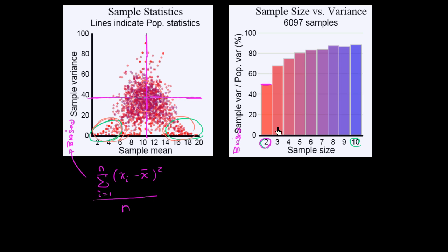When sample size is three, it's approaching two-thirds, 66.6% of the true population variance. When sample size is four, it's approaching three-fourths of the true population variance.